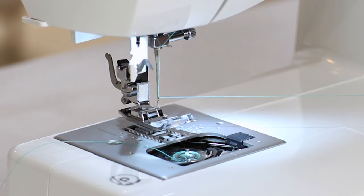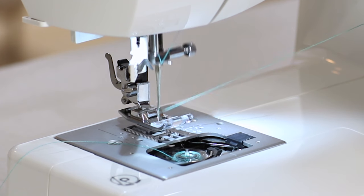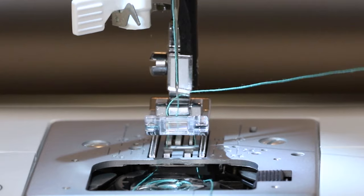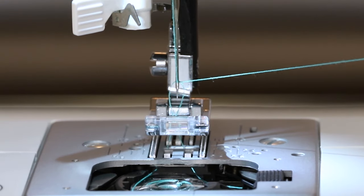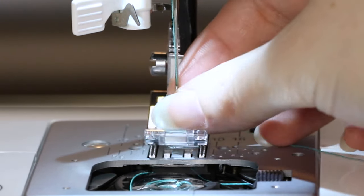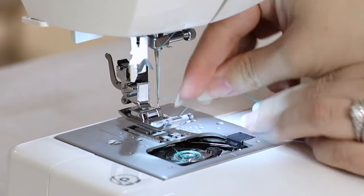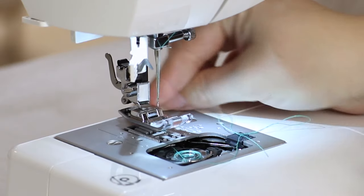Now we need to draw up the bobbin thread. Hold the upper thread tail in your hand and turn the hand wheel towards you one complete rotation until the needle is in the highest position. Then pull up on your thread and there will be a loop of bobbin thread. Pull that up and place it underneath the presser foot.